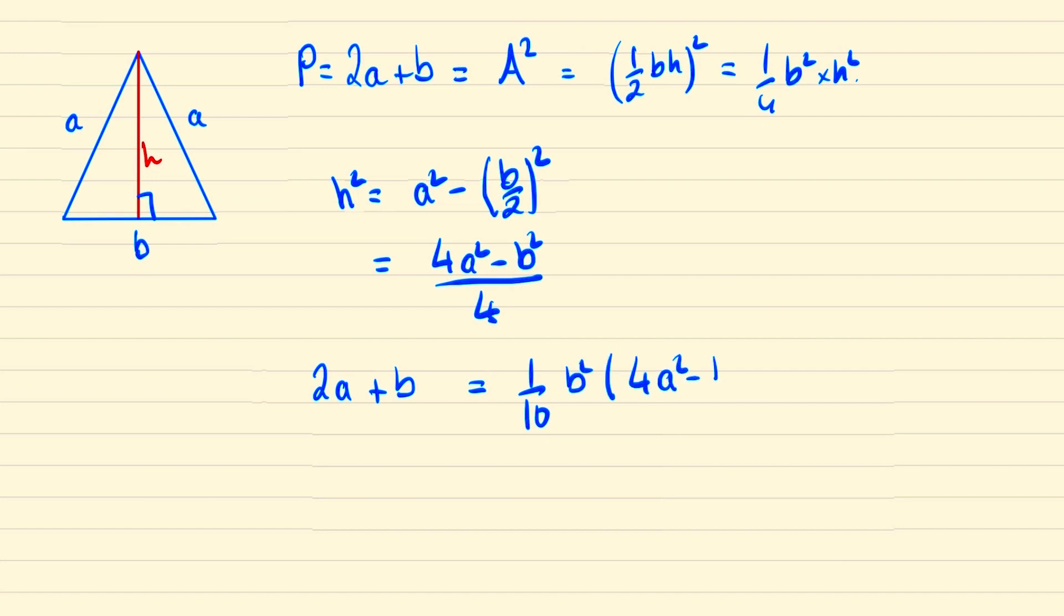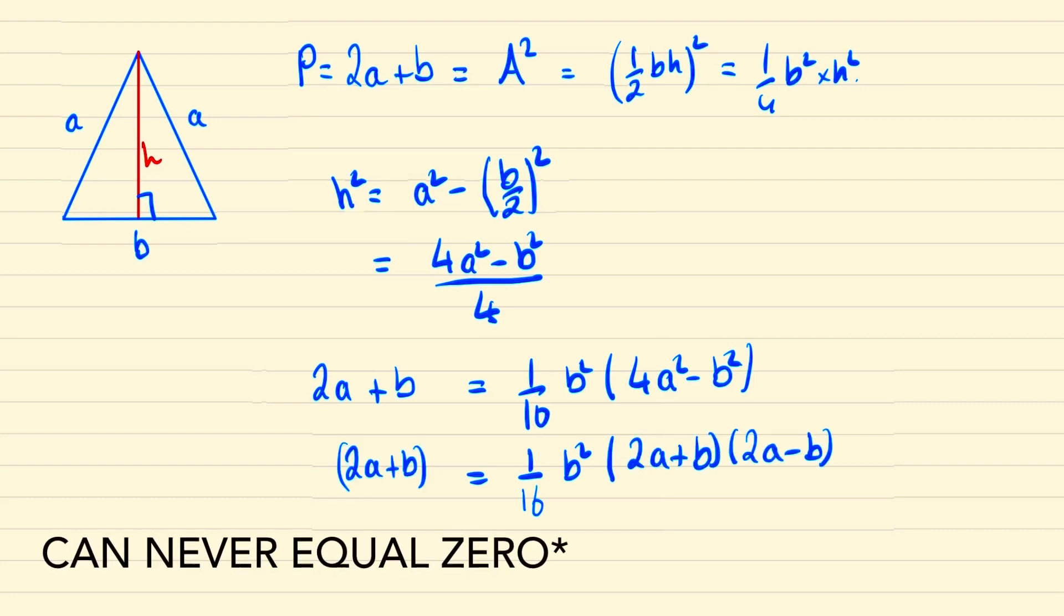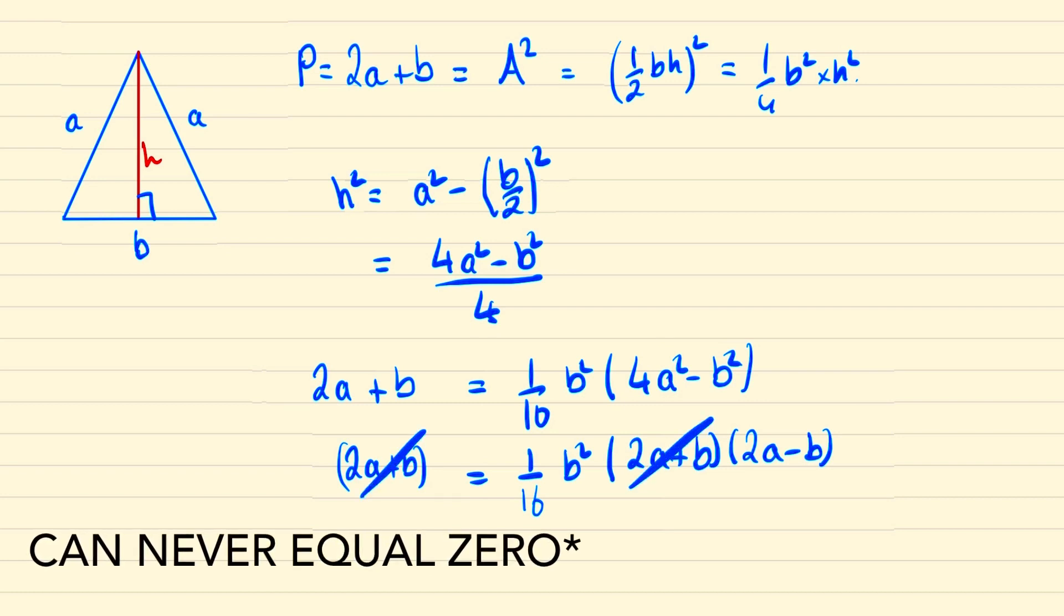At this stage we can notice that 4a squared minus b squared factorizes as the difference of two squares, so that can be 2a plus b times 2a minus b. Since 2a plus b can never equal 1, we can go ahead and divide it on both sides of the equation and so now we have that 16 is equal to b squared times 2a minus b.